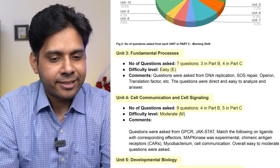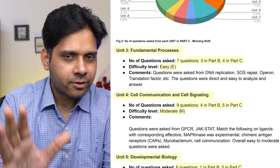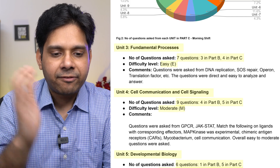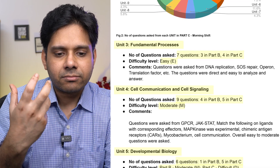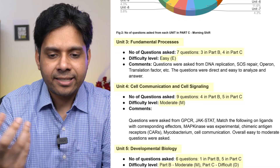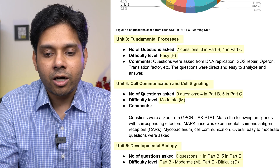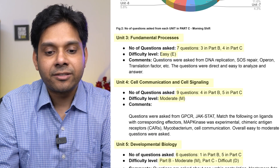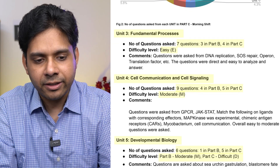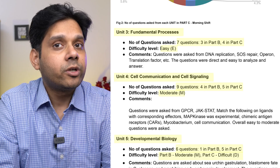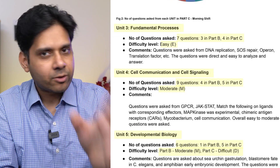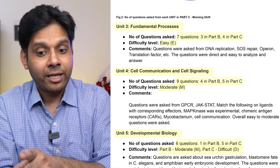Unit 4, Cell Communication and Signaling, had nine questions — four in Part B and five in Part C. Questions were asked from GPCR, JAK-STAT, match-the-following on ligands with corresponding effectors, and many other topics.